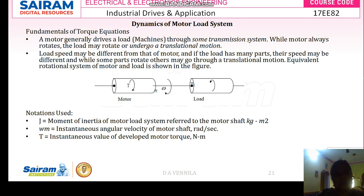The load will have different parts — some parts will rotate and some will not. So the load speed will not be the same as the motor speed. Here, T is the motor torque, TL is the load torque, and omega is the speed of the shaft. The motor torque is rotating in the clockwise direction and the load torque is also in the clockwise direction.